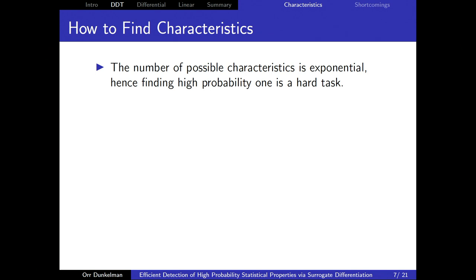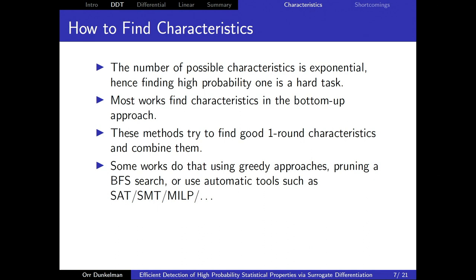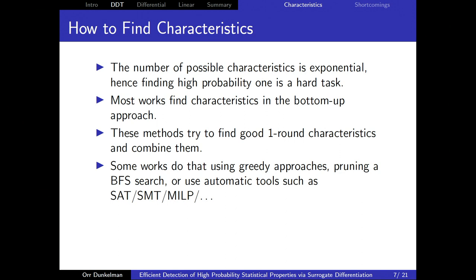How do you find differential characteristics? There is an exponential number of characteristics — from an input difference you try all possible paths from input to output to find the one with the best probability. Several works try to find these characteristics using a bottom-up approach: find good one-round characteristics and concatenate them using intuition or greedy approaches, then pruning with BFS, Matsui's algorithm, and today automatic tools like SAT solving, MILP, or constraint programming.